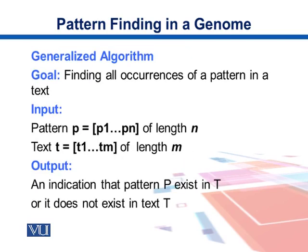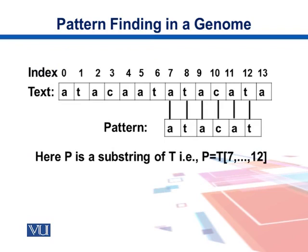Pattern finding in a genome can be presented formally. Our goal is to find all occurrences of a pattern in a text. The inputs are: a pattern p of length n (p1 through pn) and a text t of length m (t1 through tm). The output indicates whether pattern p exists in t or not. We use arrays starting from index zero, and in this diagram the text has a total length of 14.